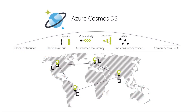First, what is Azure Cosmos DB? It's a globally distributed, multi-model database that allows you to achieve massive scale with low latency. The multi-model side of things is where we're going to be able to create our graph database from. They offer key-value, column family, documents, and graph.